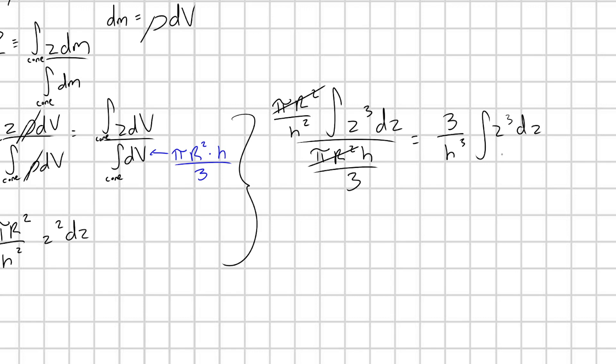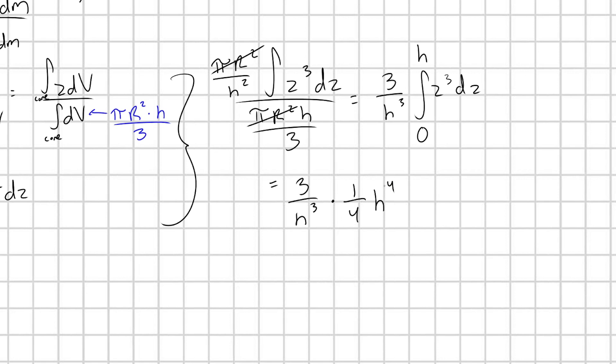What are the boundaries of my integral? Well, we just started at the tip of the cone, which was z equals 0, and we stacked our disks up all the way to the top of the cone, which was at height h. And so let's go ahead and reduce this integral. This is going to give us 3 over h cubed times one fourth h to the fourth. Or in other words, we're going to have 3/4 h as our answer.